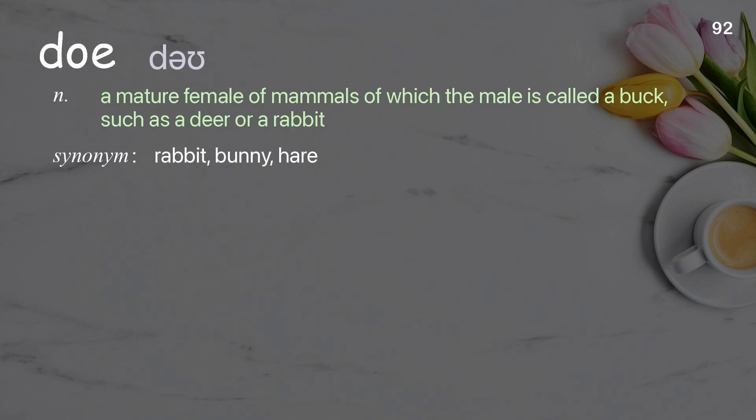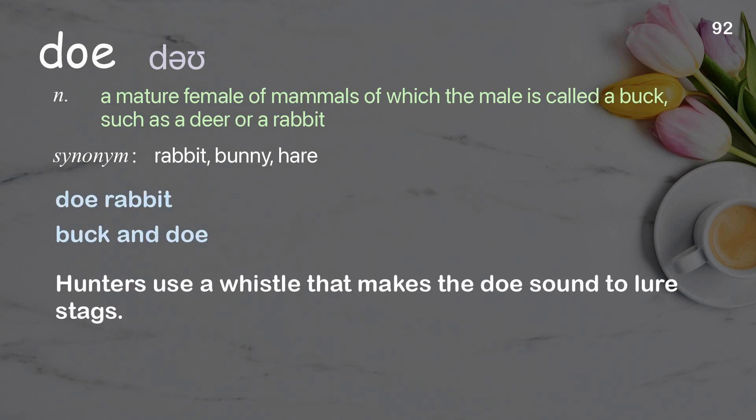Doe: A mature female of mammals of which the male is called a buck, such as a deer or a rabbit. Examples: doe rabbit, buck and doe. Hunters use a whistle that makes the doe sound to lure stags.